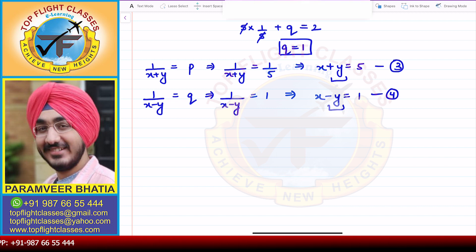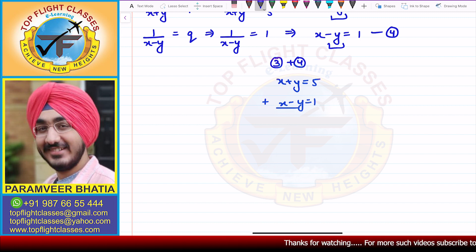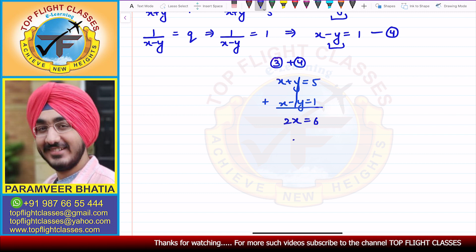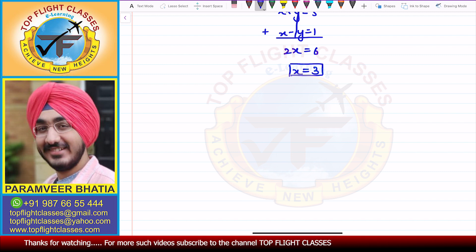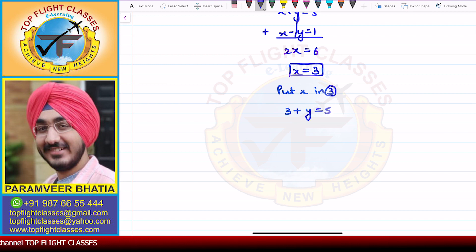Now adding equations 3 and 4: x + y = 5 and x - y = 1. The +y and -y cancel on addition, giving 2x = 6, so x = 3. Putting x = 3 in equation 3: 3 + y = 5, so y = 2.